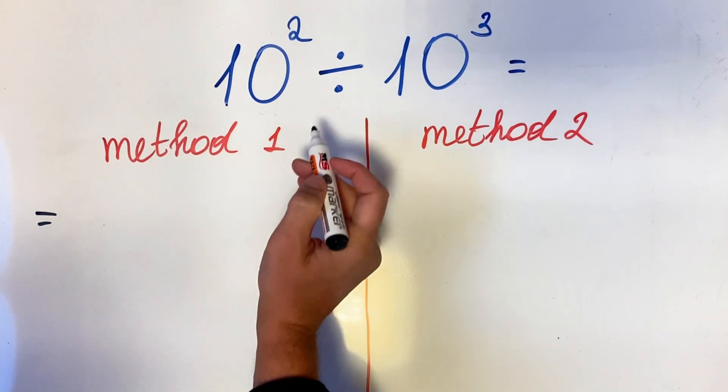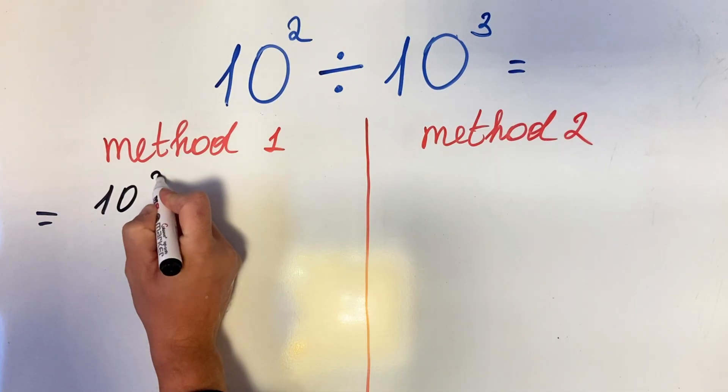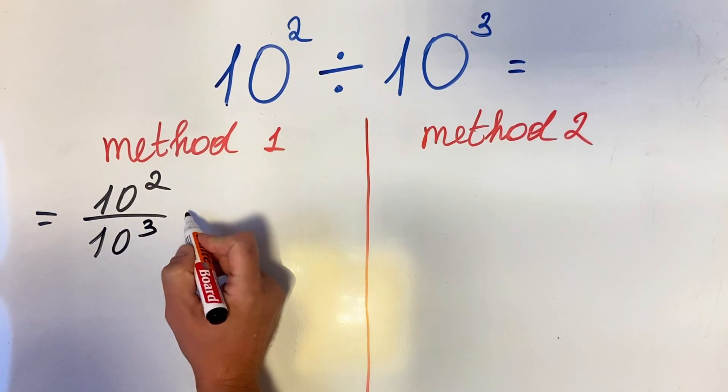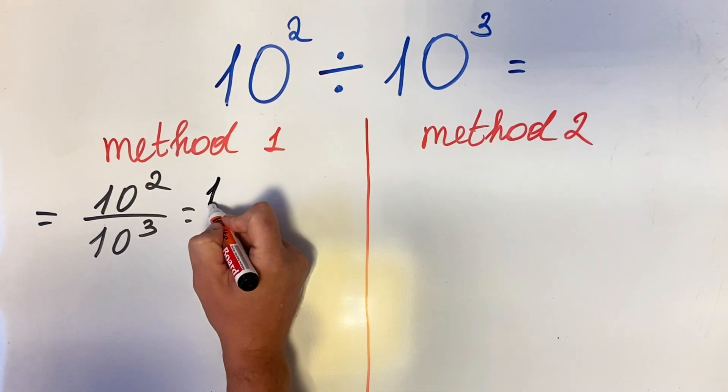is the factor method. The division can also be written as a fraction, so we have 10 squared over 10 cubed. How can you write this fraction differently? We can write it as 10 multiplied by 10 over three 10s, because we have squared and cubed.